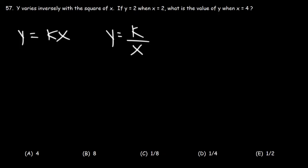Now in this example, y varies inversely with the square of x. So it's going to be k over x squared. The square of x is x squared.